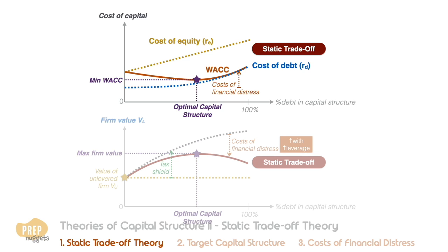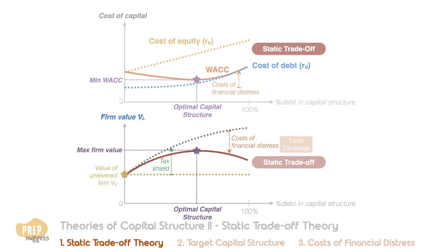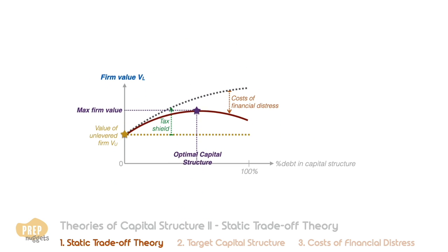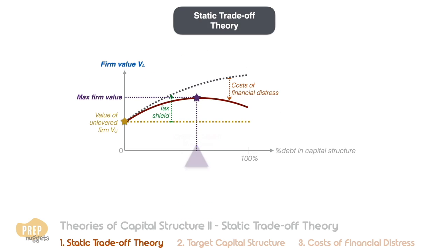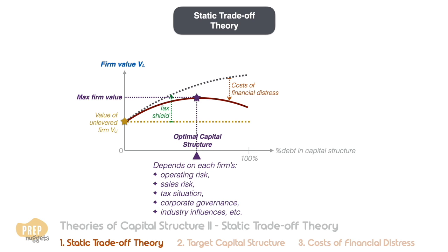Note that every firm will have a different optimal capital structure that depends on each firm's operating risk, sales risk, tax situation, corporate governance, industry influences, and other factors.